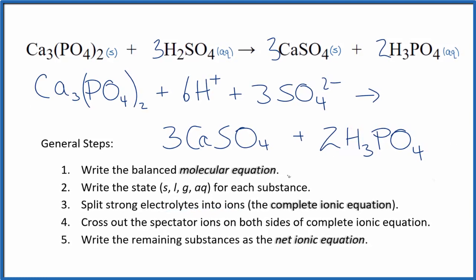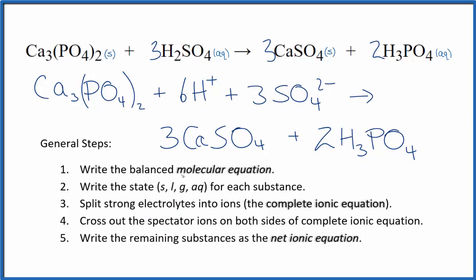So at this point, we can cross out spectator ions, except there aren't any spectator ions. Everything's different in the reactants and the products. So this is the net ionic equation for calcium phosphate plus sulfuric acid.